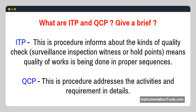What are ITP and QCP? ITP is a procedure that informs about the kinds of quality checks, surveillance inspection, witness or hold points, meaning quality of works is being done in proper sequences. QCP is a procedure that addresses the activities, requirements, and details.